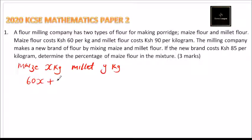We add to it the millet costs 90, so it will be 90Y. That is the cost of millet: you multiply by the number of kg.